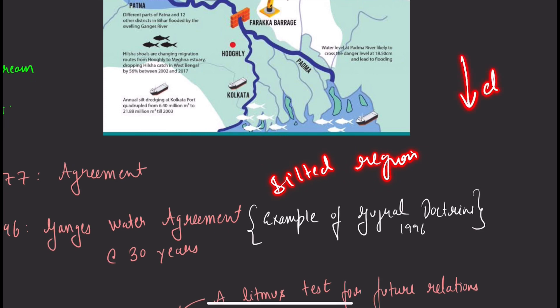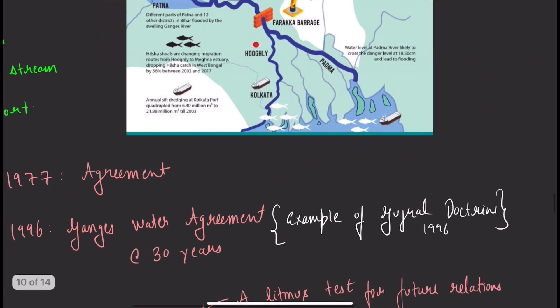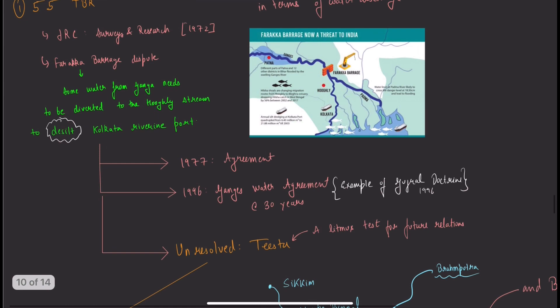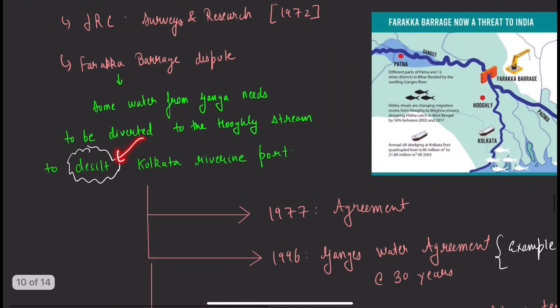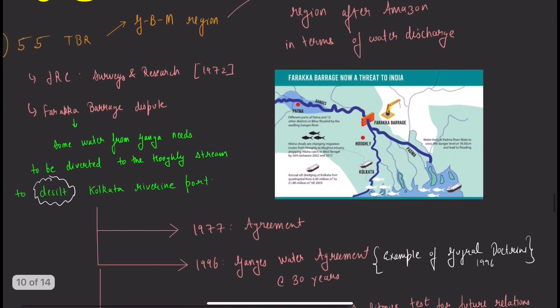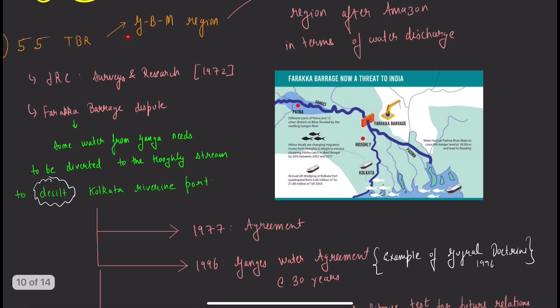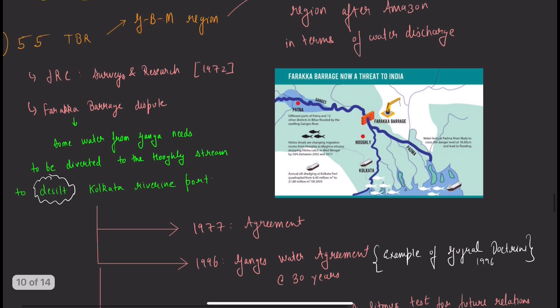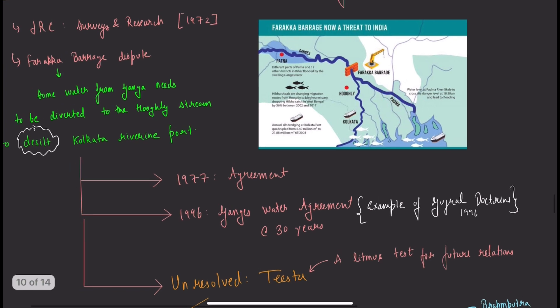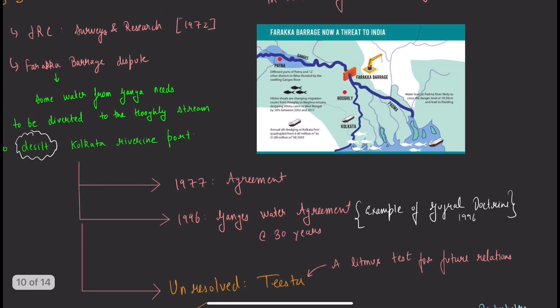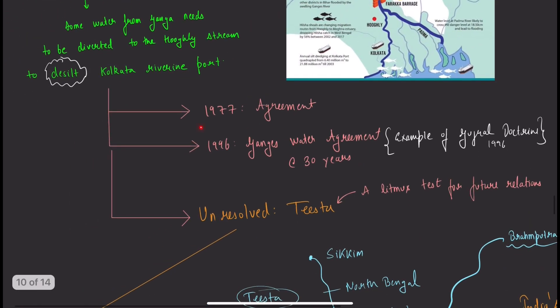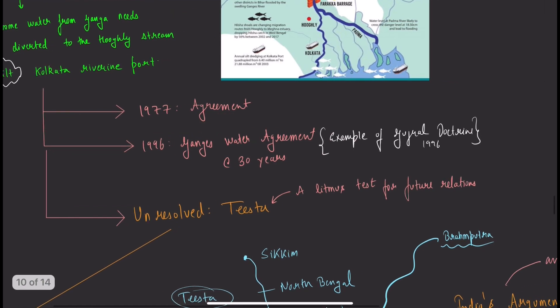There must be some depth. If siltation happens, depth will decrease. The issue was that if we divert Ganga's water and build a barrage here, there will be less water downstream. Bangladesh raised the dispute that less water was reaching them because we built the barrage.